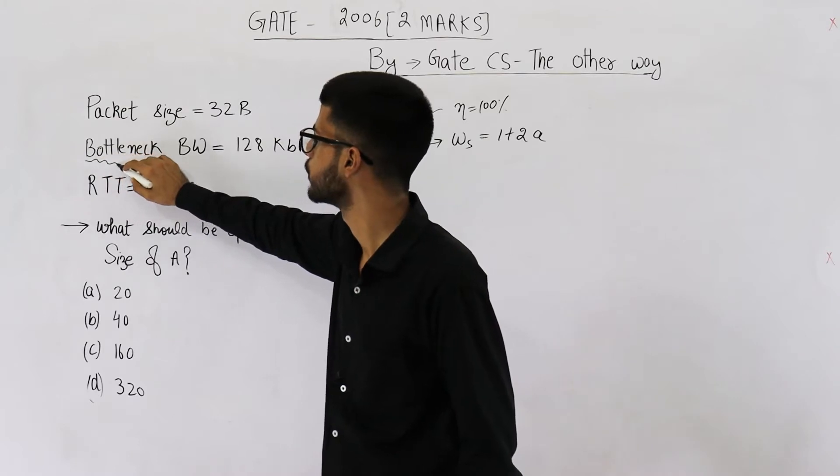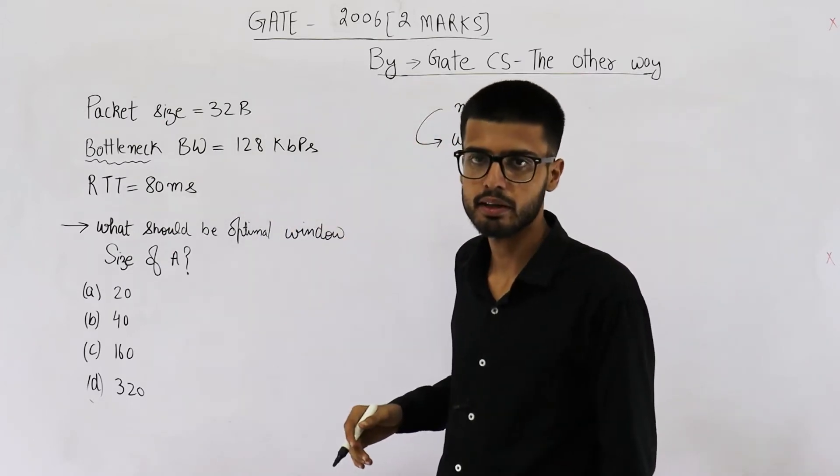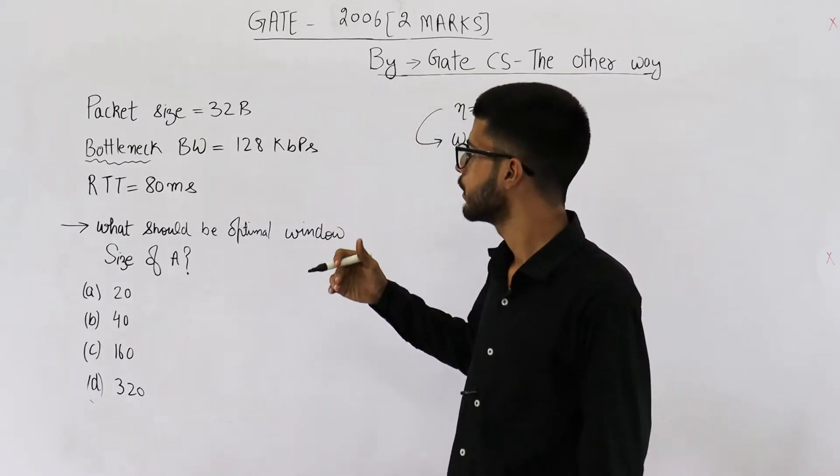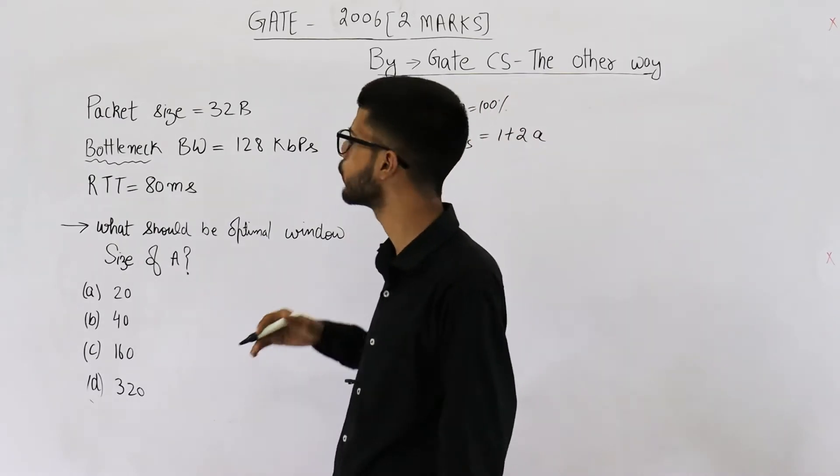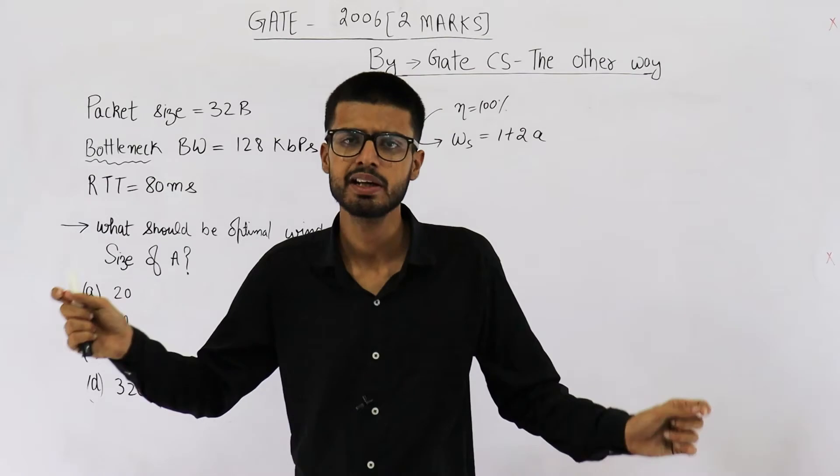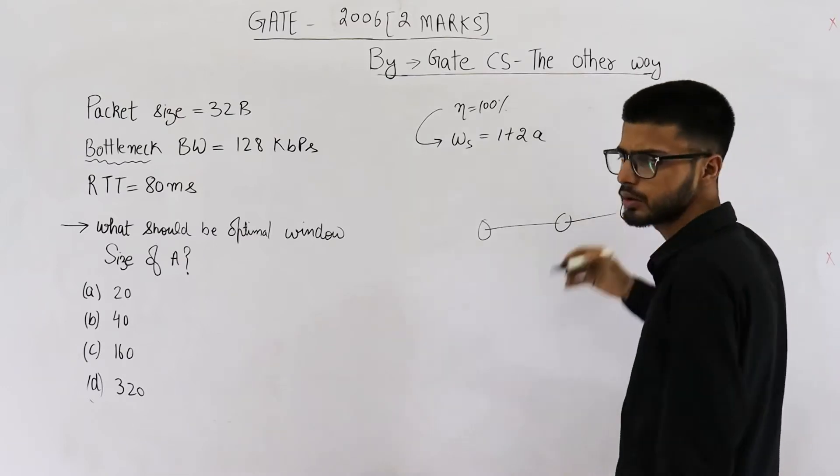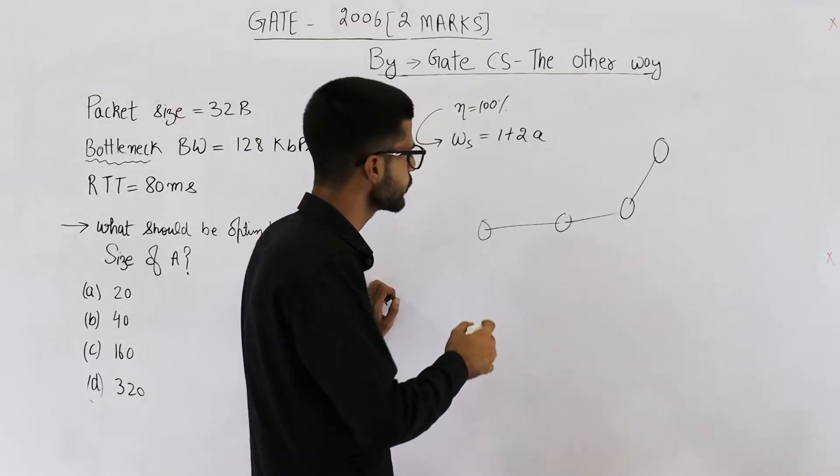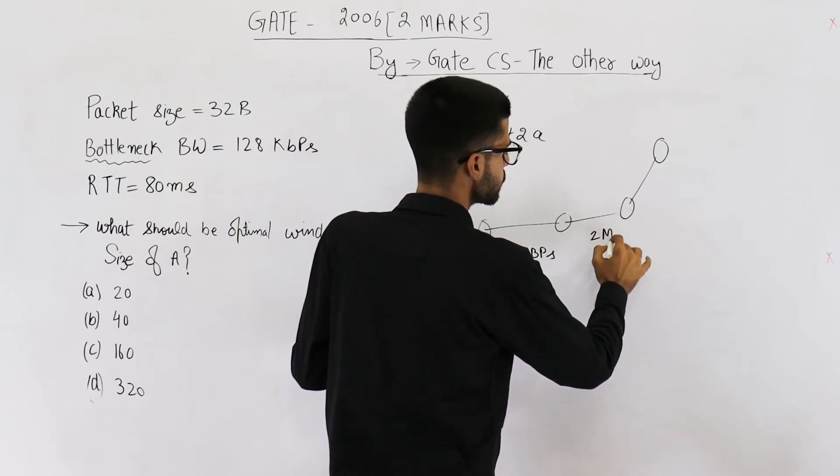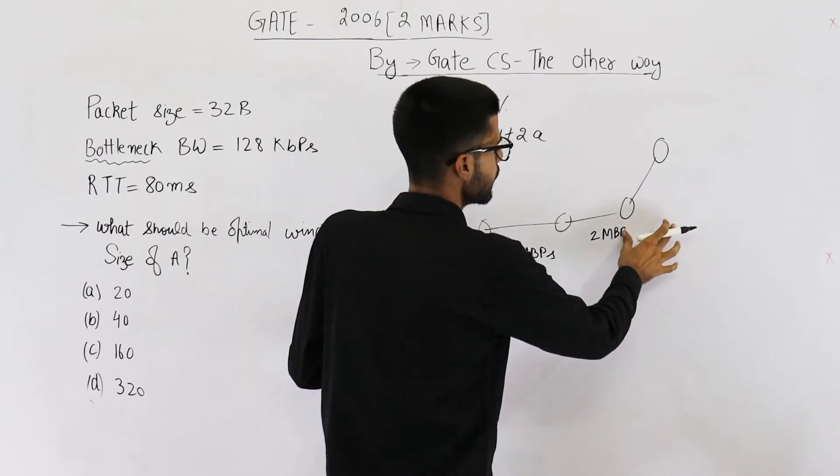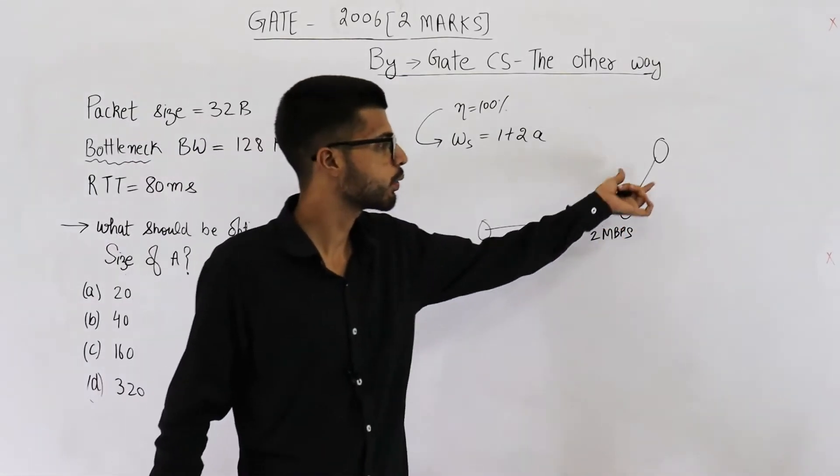First one is this word bottleneck. Bottleneck means limiting or minimum. Limiting bandwidth on the path is 128 kbps. That means there is a possibility at some place in the path the bandwidth is higher than 128 kbps. But you know we consider the minimum one only. So even if there is higher bandwidth available between A and B at some place we will neglect it. Suppose this is the path between A and B. All of these are routers. So suppose here the bandwidth is 5 mbps, here the bandwidth is 2 mbps, and here the bandwidth is 128 kbps. So you are going to consider the minimum only.